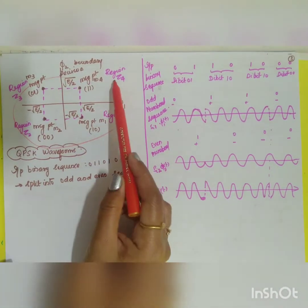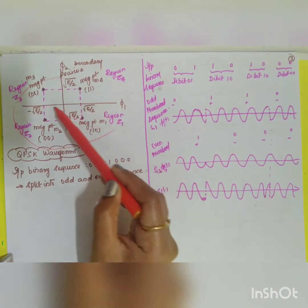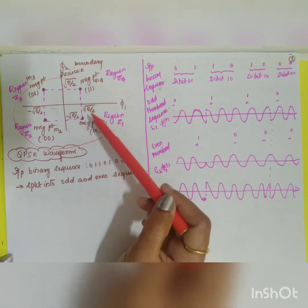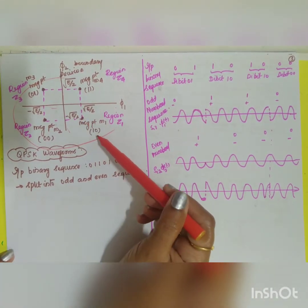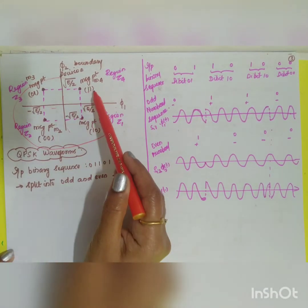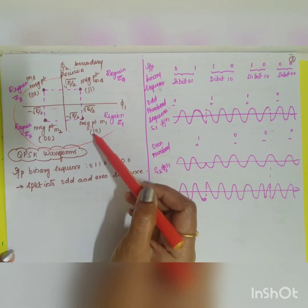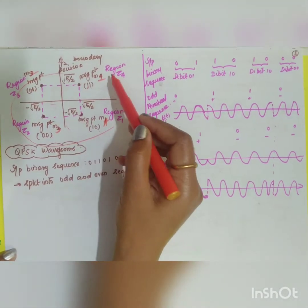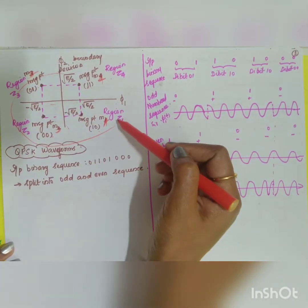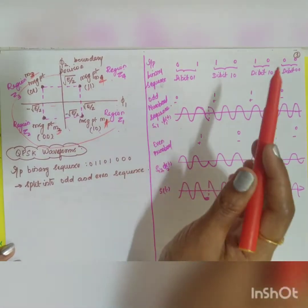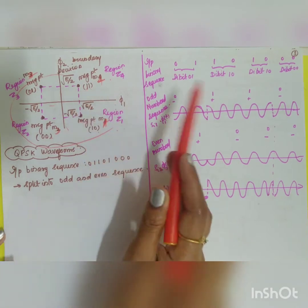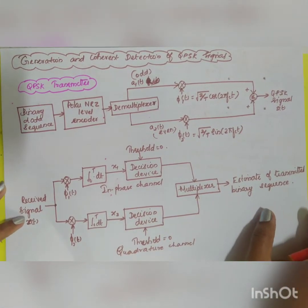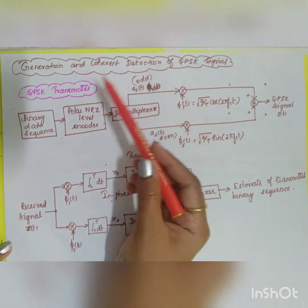The signal space representation shows two orthonormal basis functions φ1 and φ2 with a decision boundary, and four message points labeled m1, m2, m3, m4 corresponding to dibits 11, 01, 00, 10. The decision regions z1, z2, z3, z4 are drawn accordingly. The signal waveforms will be seen separately in a different video. Next, we look at the generation and coherent detection of the QPSK signal — the QPSK transmitter.